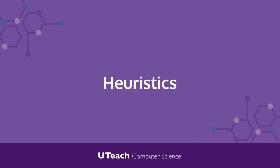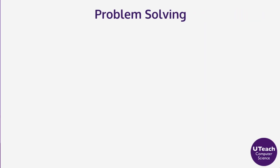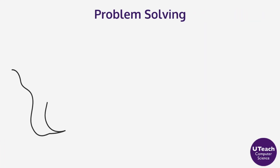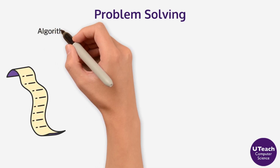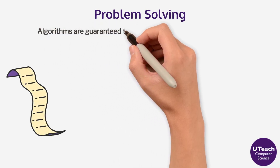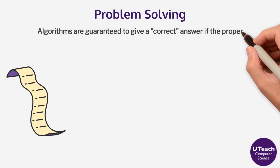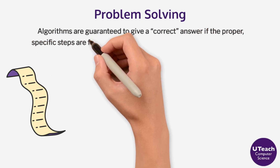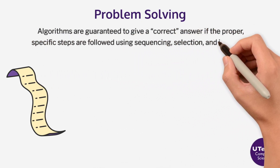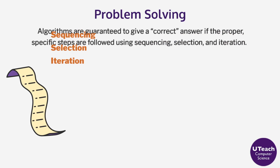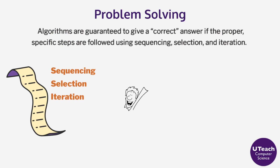Heuristics. Until now, problem solving with computers has been discussed in terms of algorithms. Algorithms are guaranteed to give a correct answer if the proper, specific steps are followed using sequencing, selection, and iteration.